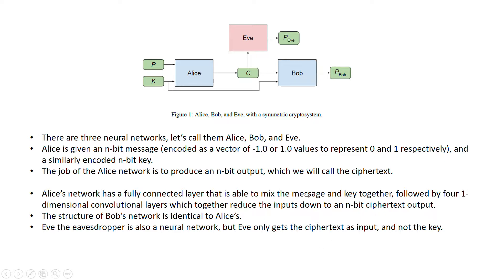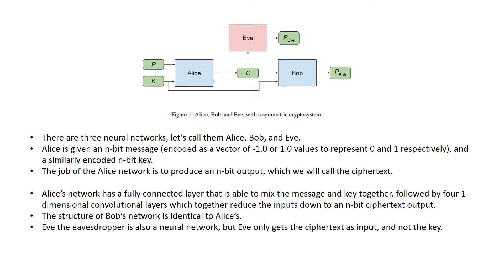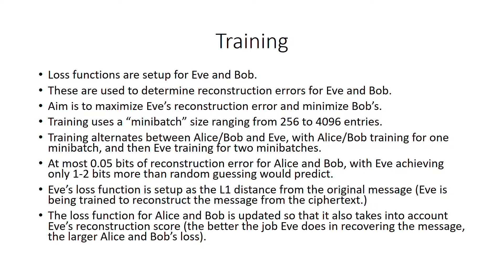The structure of Bob is similar to that of Alice. Eve is the eavesdropper but only gets the ciphertext as input, not the key. You may wonder how Alice and Bob determine whether Eve is able to read what they are communicating. This is explained through loss functions. There is a loss function specified for Alice and Bob and one for Eve. The aim is to maximize Eve's reconstruction error and minimize Bob's. Training proceeds by first having Alice and Bob train together, then Alice and Eve train, and then loss functions are computed.